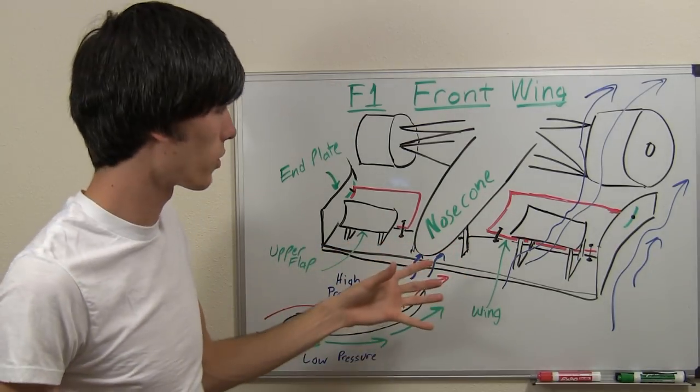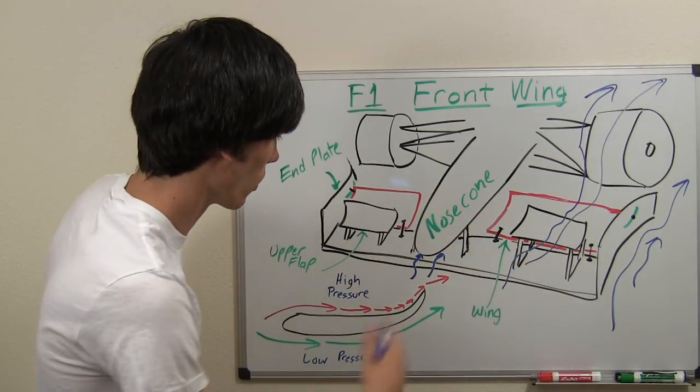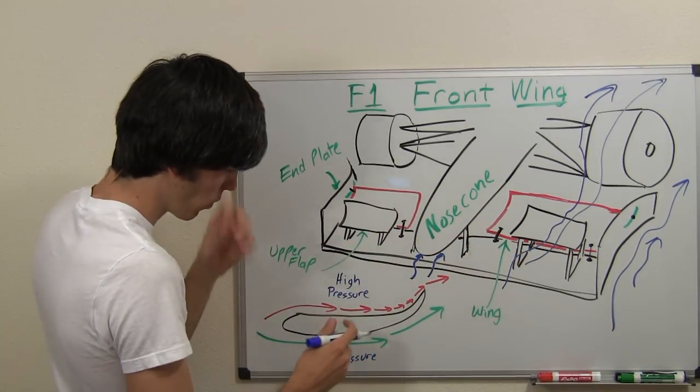Obviously downforce is one of the major reasons for the front wing. That's why it's actually called a wing. So how does a wing work?